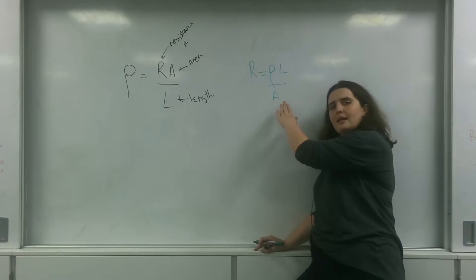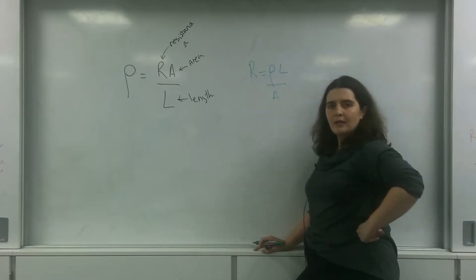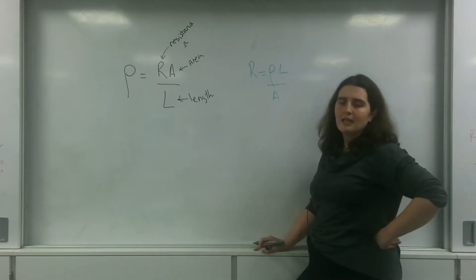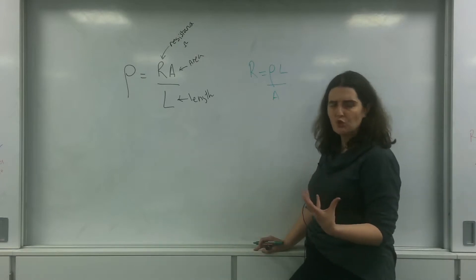Whereas if I had a really big area, a cross-sectional area, my resistance goes down. And that is because there's loads of different routes for those electrons to take. So the chance of them hitting an atom is reduced.